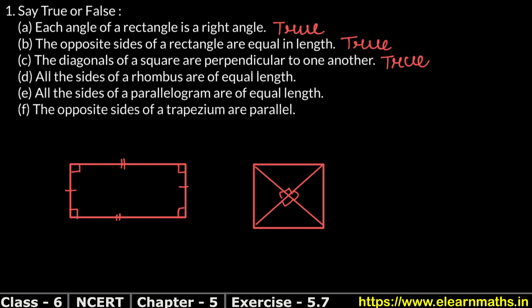So yes, it's true. Next part: all the sides of a rhombus are of equal length. We know that in a rhombus the opposite sides are parallel and all sides are equal. So this statement is also true.